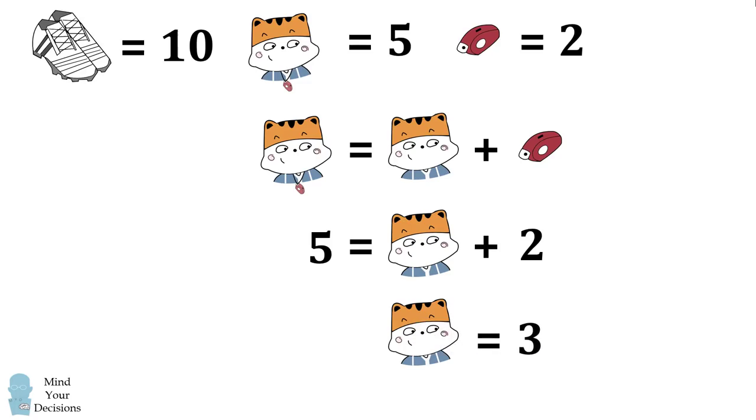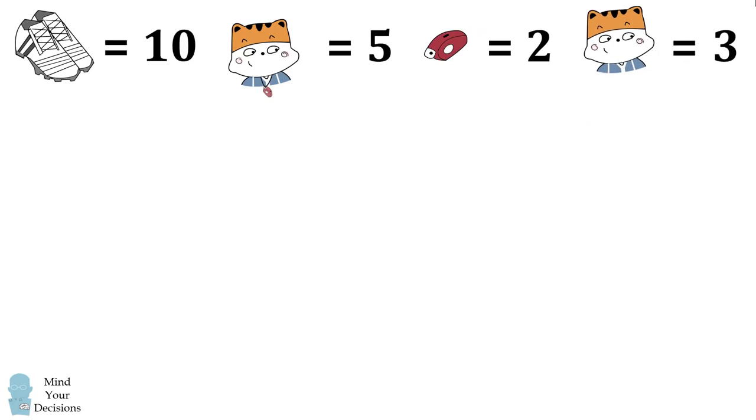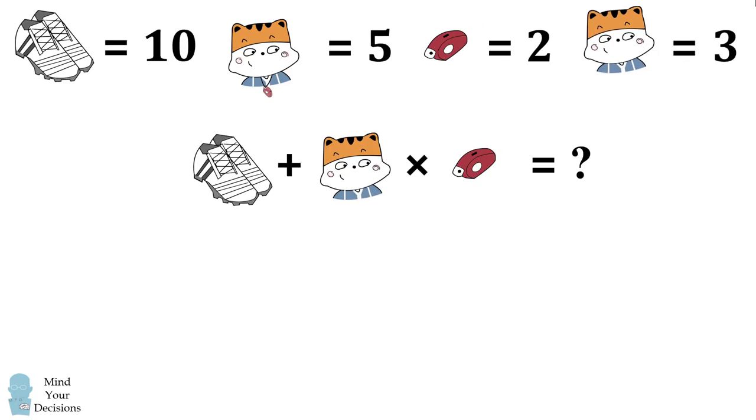So now we've figured out all the information we need to evaluate the last line correctly. What is the value of a pair of shoes, plus a cat without the whistle, times a whistle? The pair of shoes is 10, the cat without the whistle is 3, and the whistle is equal to 2.